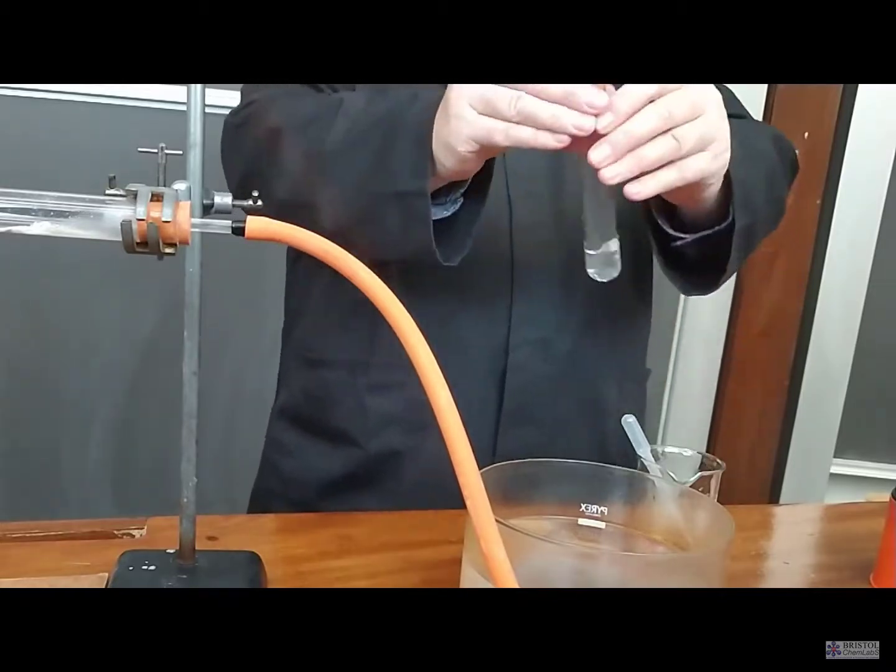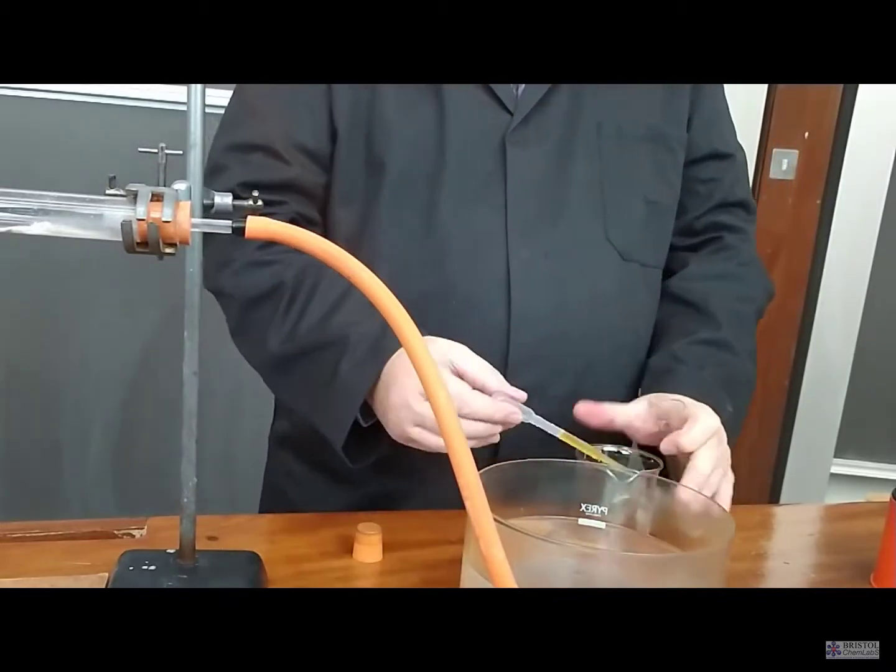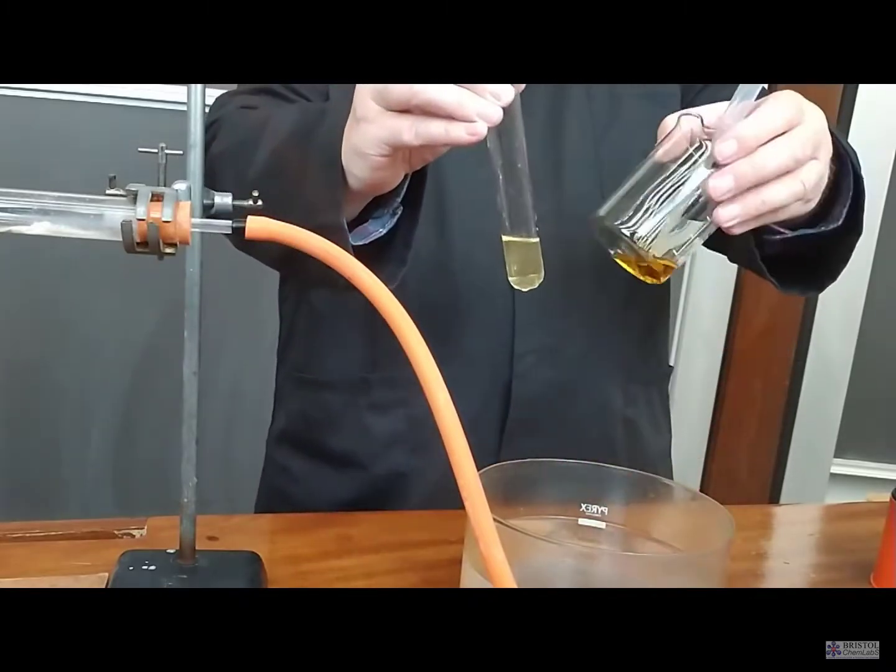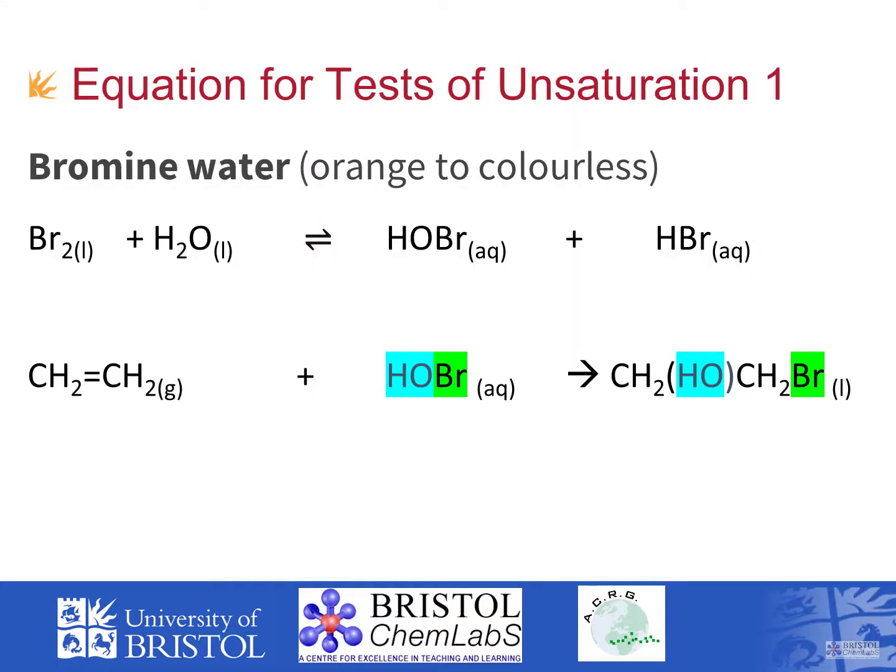The bromine water should be very dilute, and you should just add a few drops of bromine. Now here we're using a boiling tube of the gas, so we can add a few squirts. And with shaking, you should see that we've got a colour change from orange to colourless.